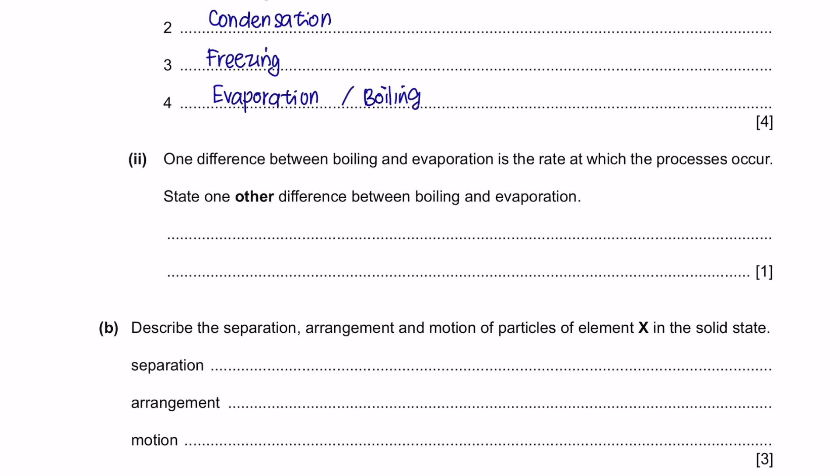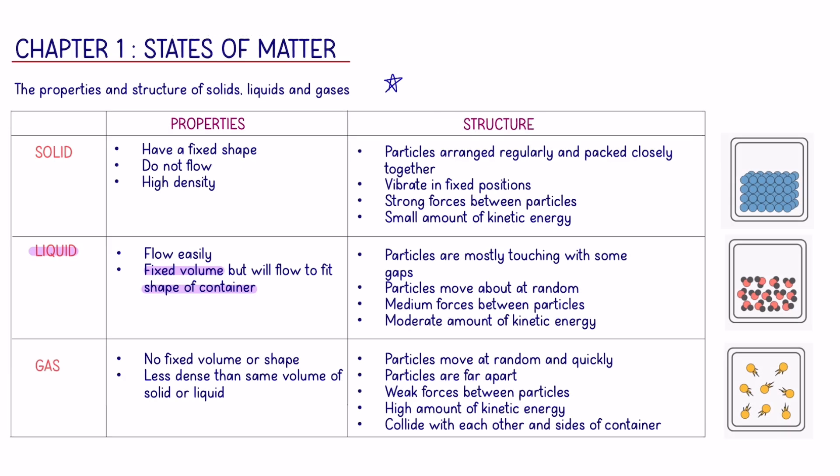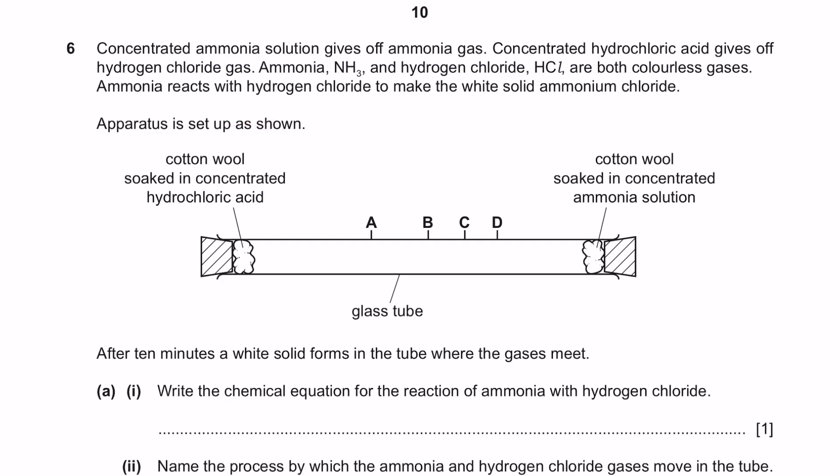Next, part 2. One difference between boiling and evaporation is the rate at which the processes occur. Boiling happens at a faster rate compared to evaporation. State the other difference between boiling and evaporation. Boiling happens specifically at 100 degrees Celsius, whereas evaporation can take place at any time. For instance, if you spill a glass of water on your table, if you come back 1 hour later, you will notice that it is dry even though your room is at room temperature. Next question part B. Describe the separation, arrangement and motion of particles of element X in the solid state. Again, we have the same type of question where you are tested on the properties and structure of the state of matter.